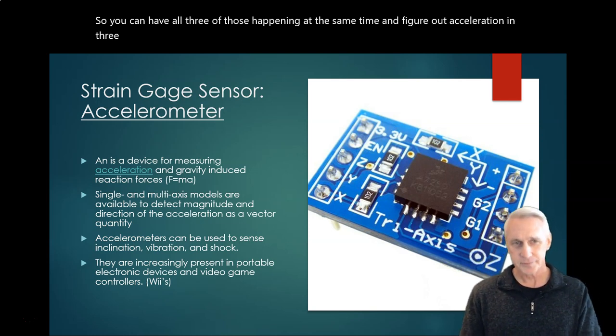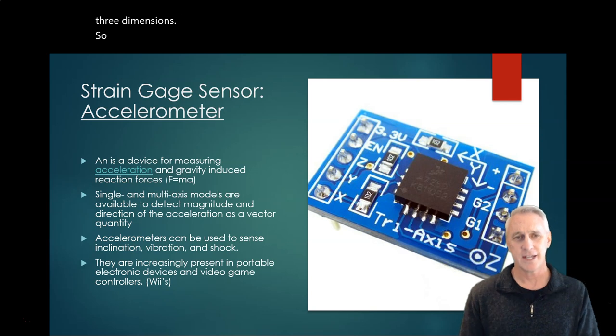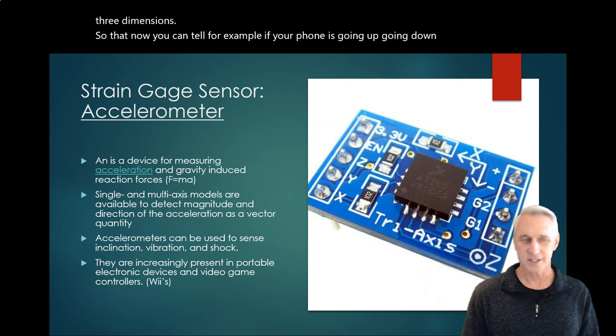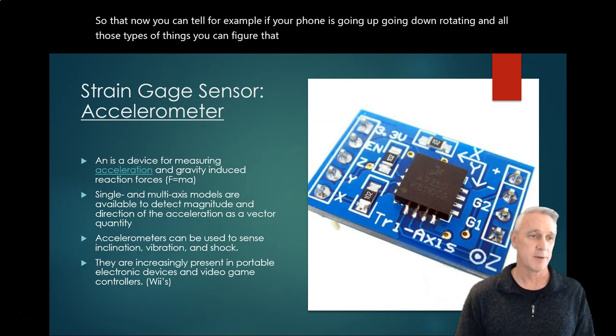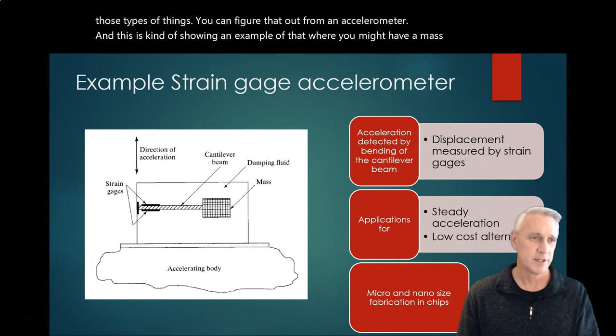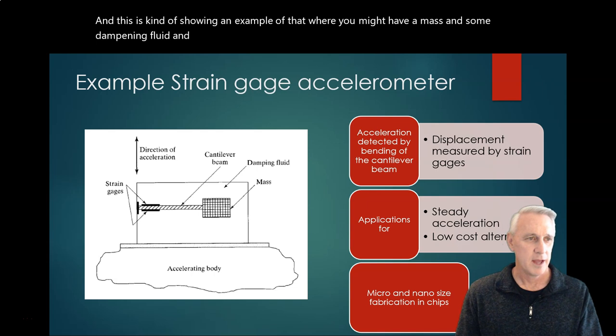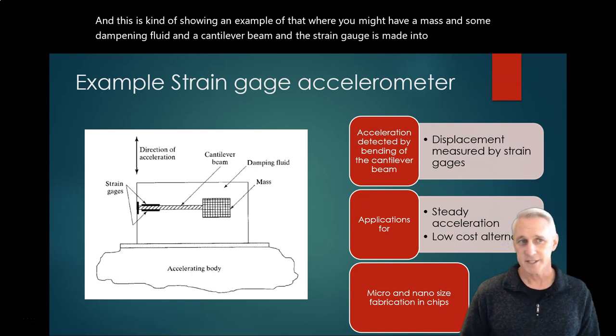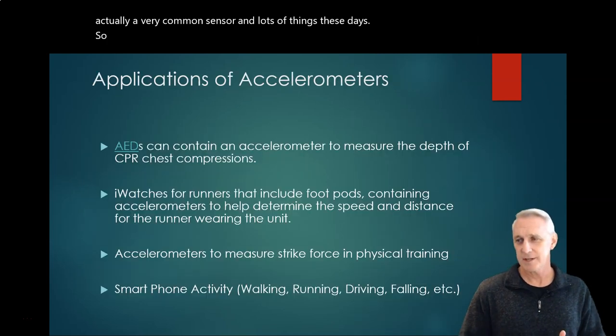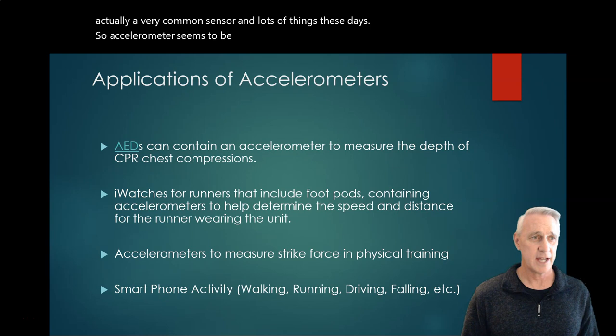So you can have all three of those happening at the same time and figure out acceleration in three dimensions so that now you can tell, for example, if your phone is going up, going down, rotating, and all those types of things - you can figure that out from an accelerometer. And this is showing an example of that, where you might have a mass and some dampening fluid and a cantilever beam, and the strain gauges meet into that. And this is actually a very common sensor in lots of things these days. So accelerometers seem to be where a lot of development is at.